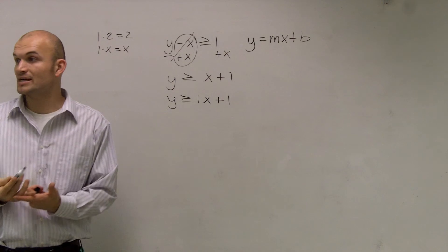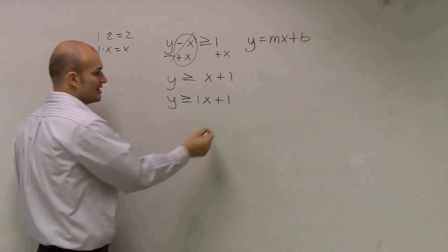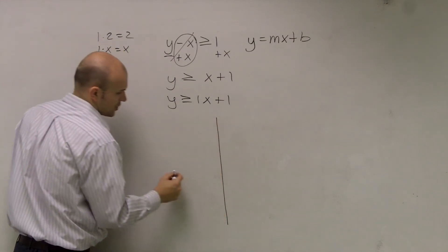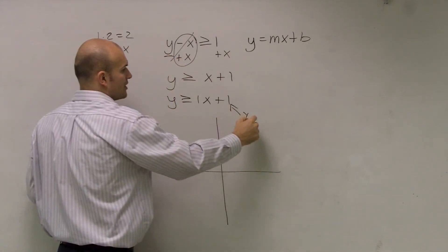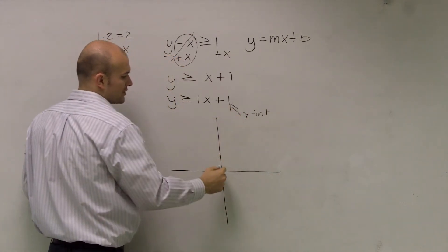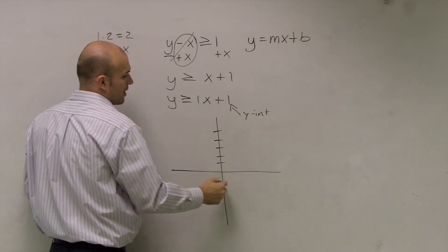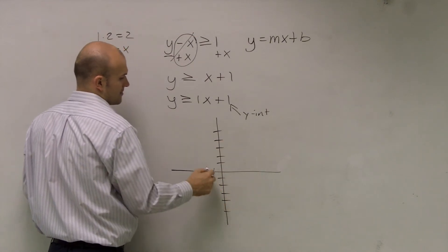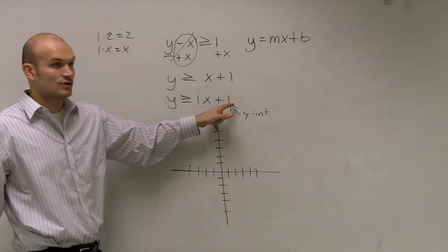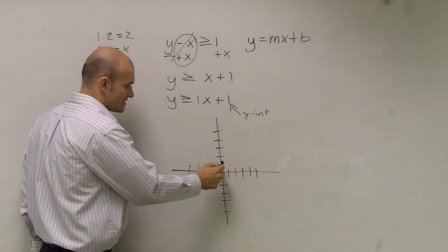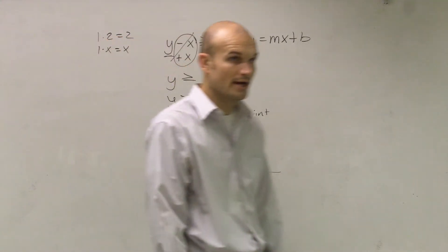So now, it's in mx plus b form. And what I can do is just draw an x and y intercept. And remember, this first point is your y intercept. It's where the graph crosses your y axis. So you can say the graph crosses at 1. So you go up to 1 and make a dot.